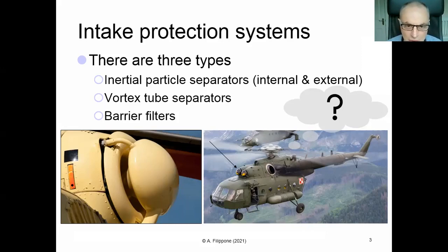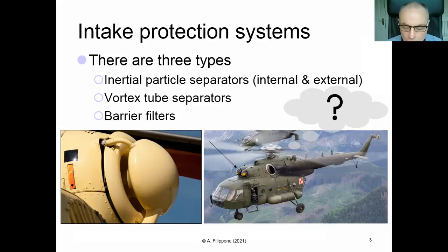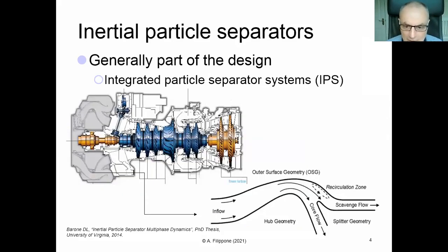We start with the externally mounted inertial particle separator. If you do not need the particle separator because you're flying in a clear atmosphere and flying to and from prepared surfaces, what you need to do is remove the separator because it will only create intake losses. So having something that can be externally mounted and dismounted is the easiest way. If it is integral with the engine, there is not much you can do.